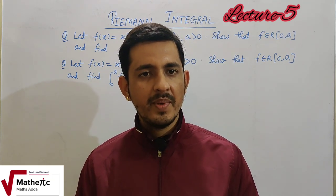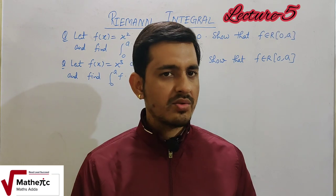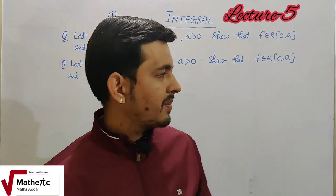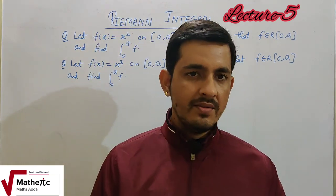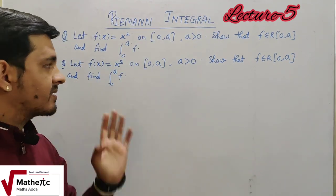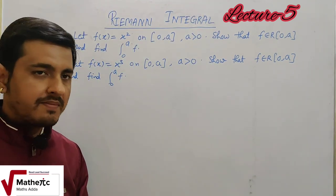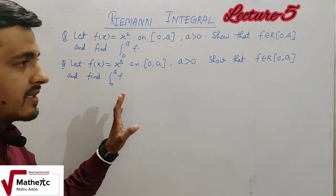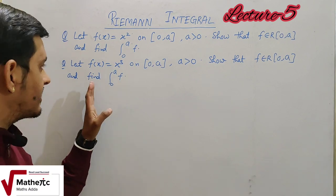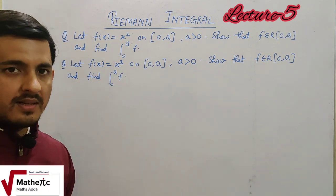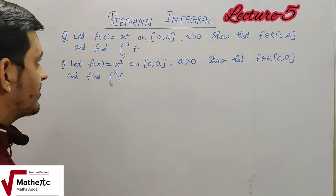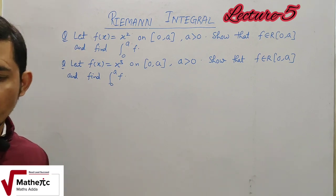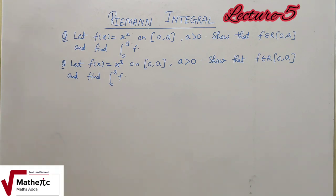I am going to solve this numerical and give you a second similar numerical for practice. Both numericals are almost the same. You are given a function f(x) = x², defined on the closed interval [0, a], where a > 0.